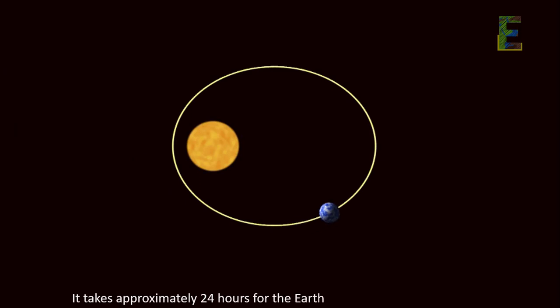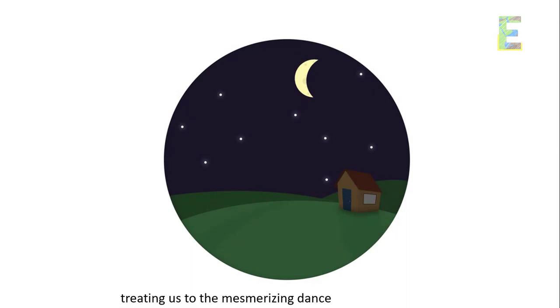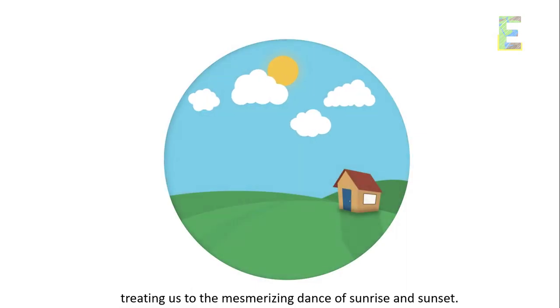It takes approximately 24 hours for the Earth to complete one full rotation, treating us to the mesmerizing dance of sunrise and sunset.